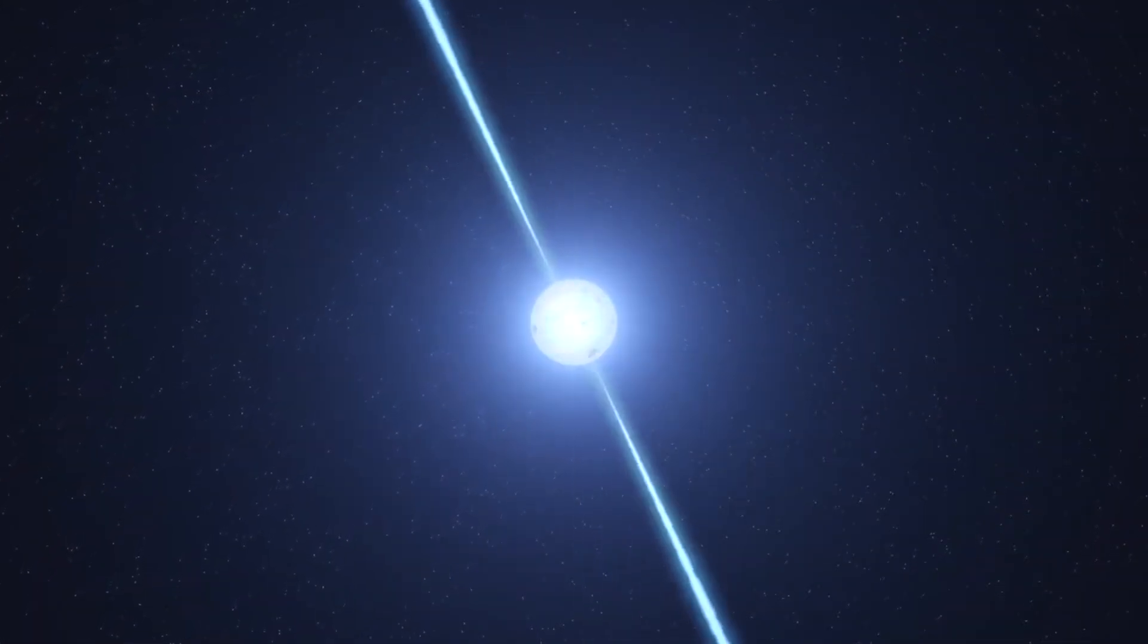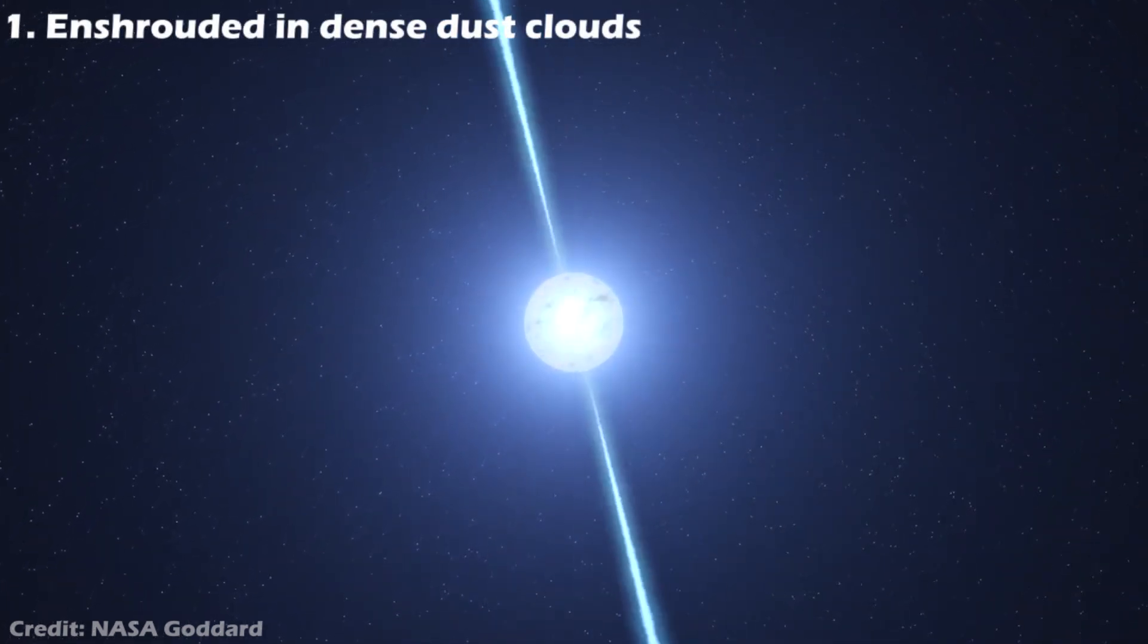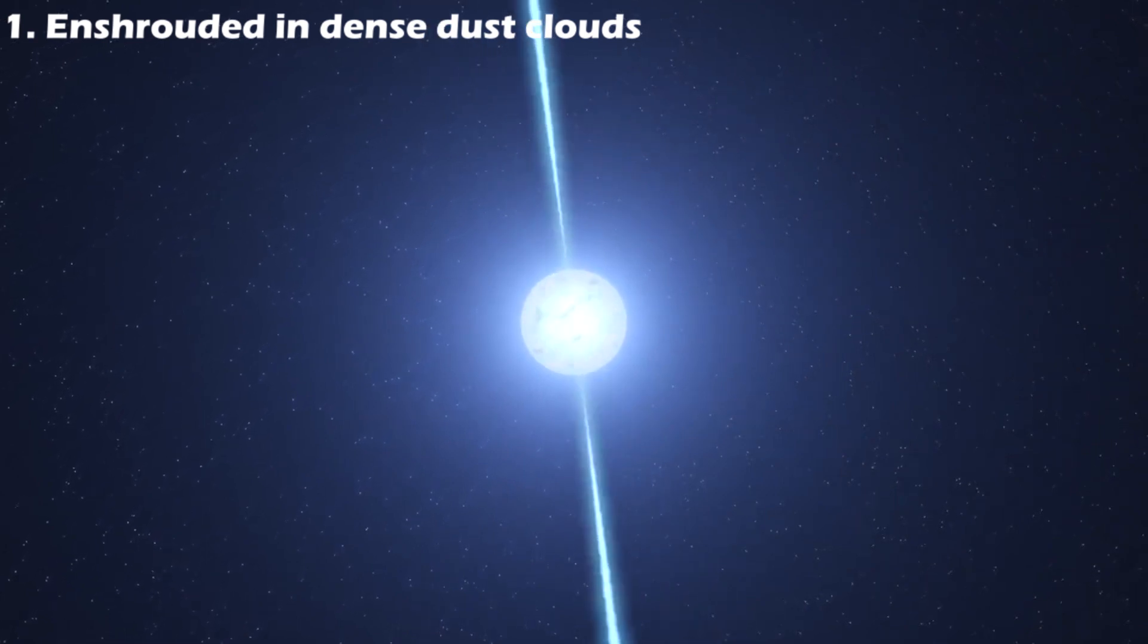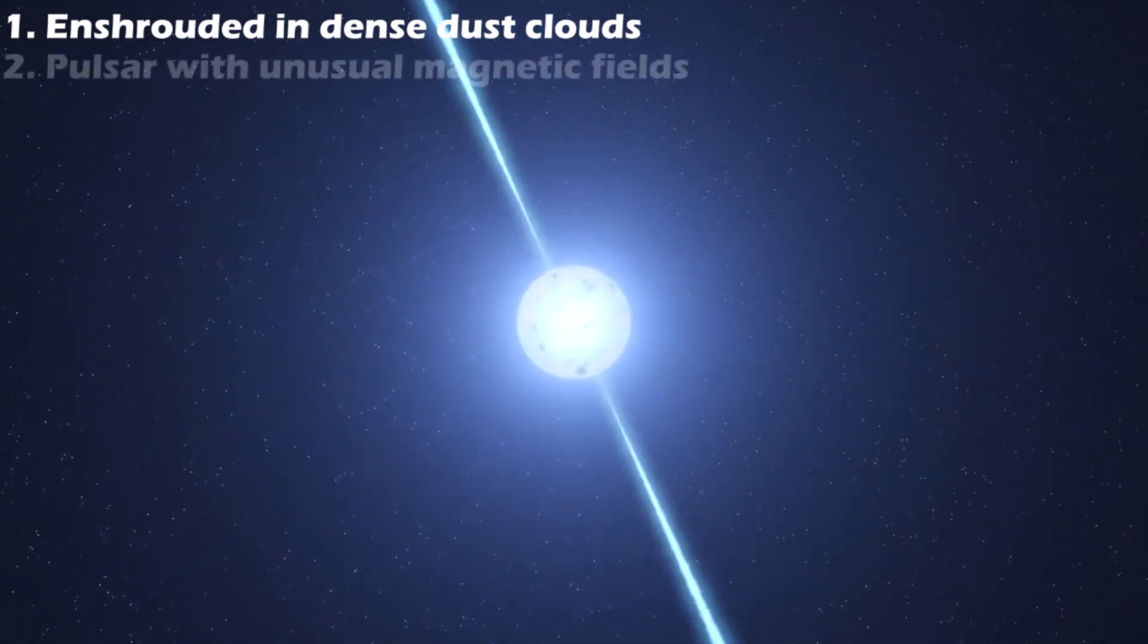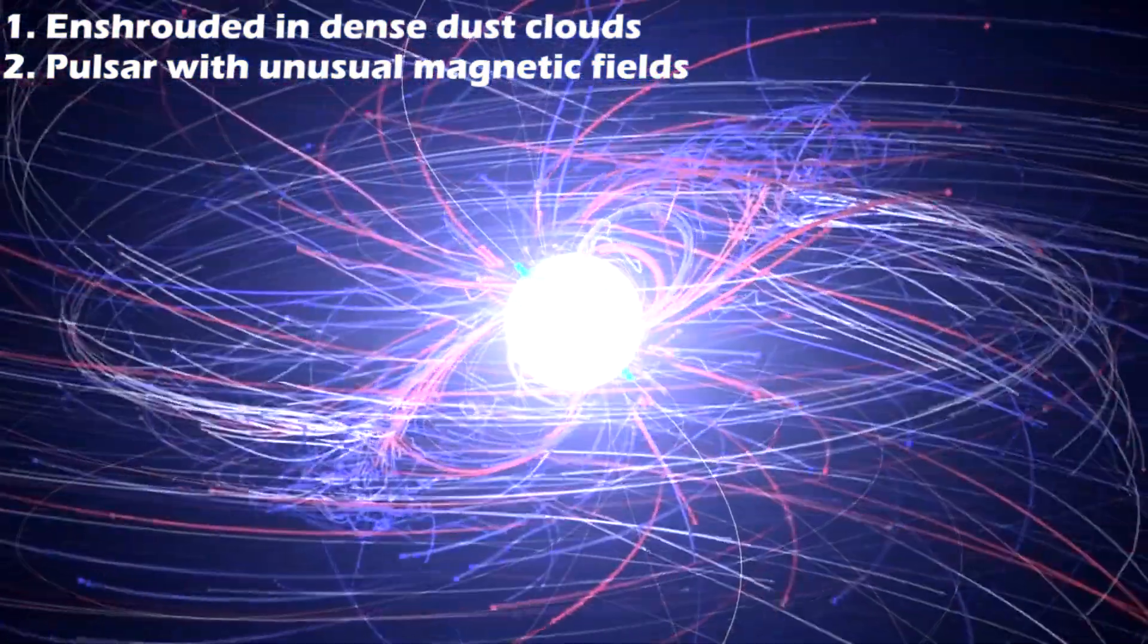A number of possibilities for the missing neutron star were being considered. The first was that the neutron star is being enshrouded in dense dust clouds. Another was that a pulsar was formed but with either an unusually large or small magnetic field.